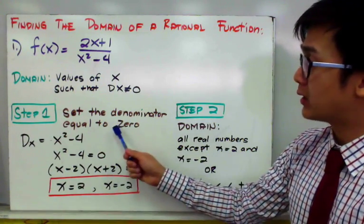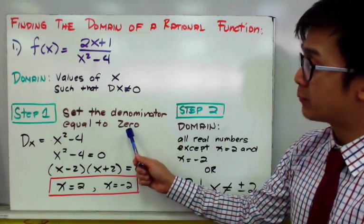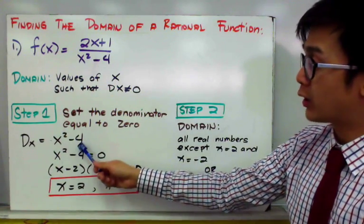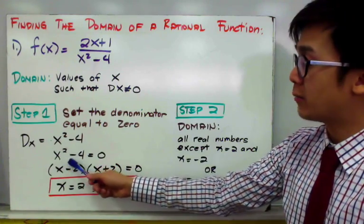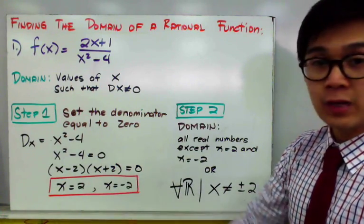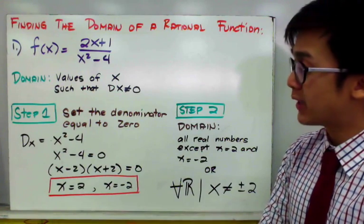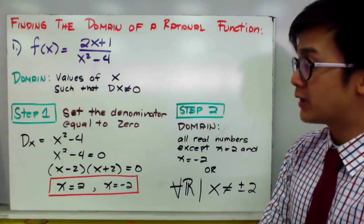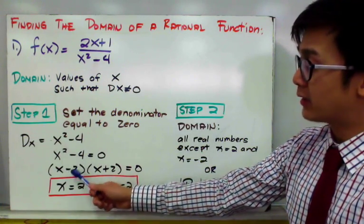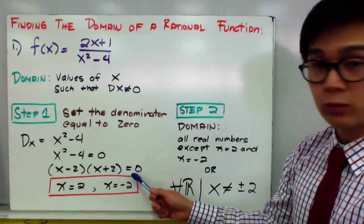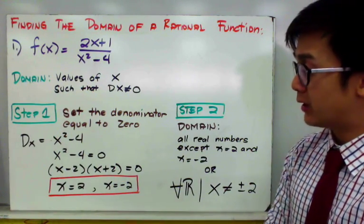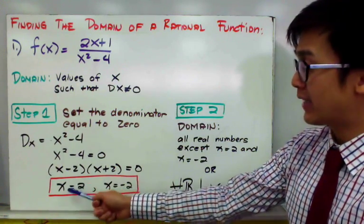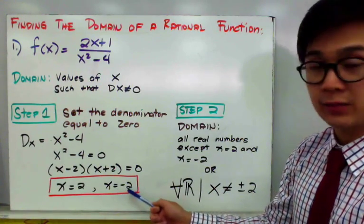We're going to set the denominator equal to 0 and solve for x. Our denominator is x squared minus 4, so we equate it to 0: x squared minus 4 is equal to 0. You will notice that x squared minus 4 is a difference of two squares. When we factor it out, we get x minus 2 times x plus 2 is equal to 0. By the zero product property, we have two values of x: x is equal to 2 and x is equal to negative 2.